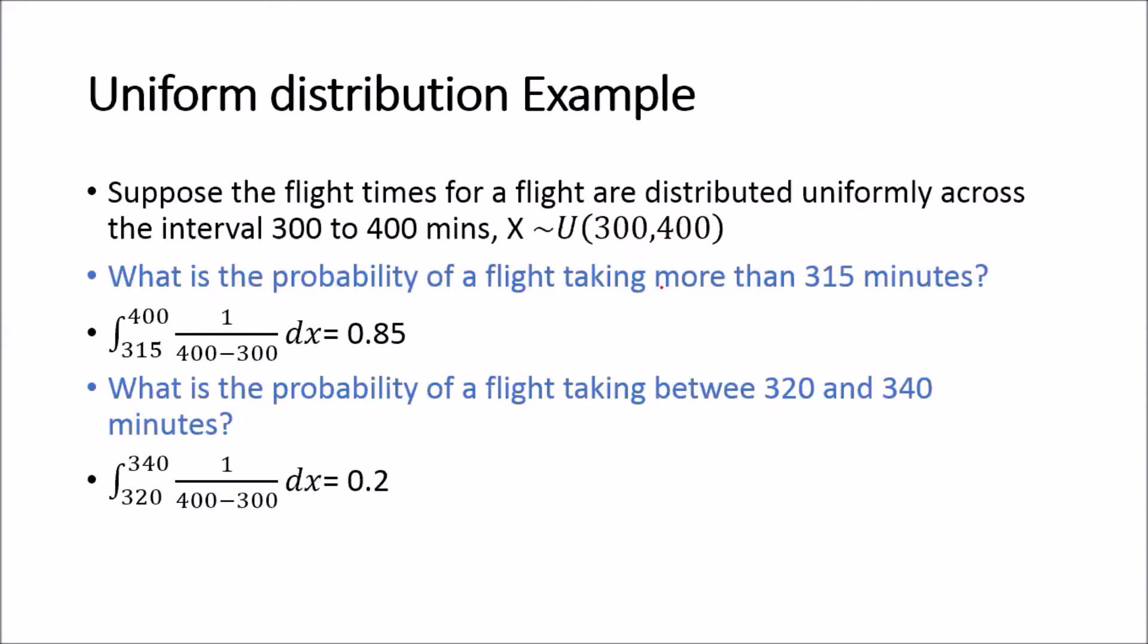Then we are asked, what is the probability of a flight taking more than 315 minutes? So we are going to have to do the integral from 315 to 400 multiplied by 1/(b-a) dx. And we know that this resolves to 0.85. Note as well that we know that we have derived the CDF, which is the probability that X is less than or equal to x.